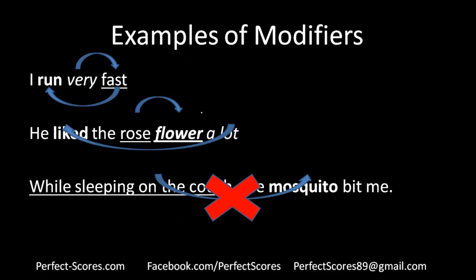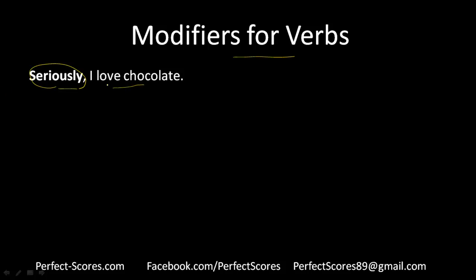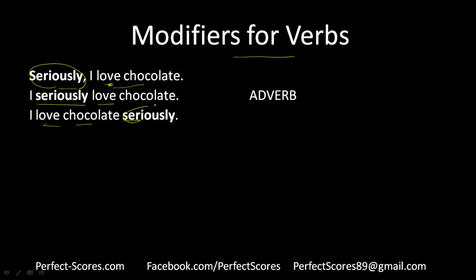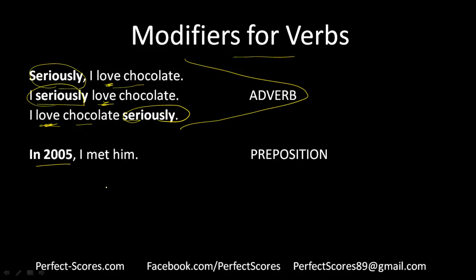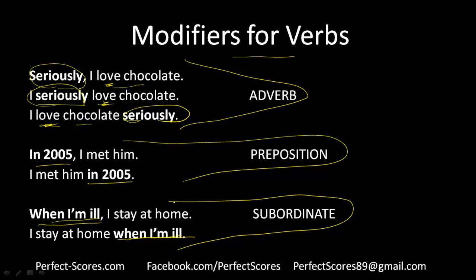Here are examples of modifiers for verbs. 'Seriously, I love chocolate' — seriously modifies love, and it can appear in different positions: 'I seriously love chocolate' or 'I love chocolate seriously.' 'In 2005, I met him' — a preposition phrase acting as a modifier. 'When I am ill, I stay at home' — subordinate clauses can also act as modifiers for verbs.